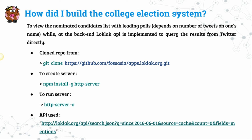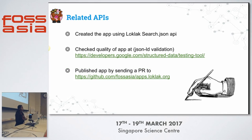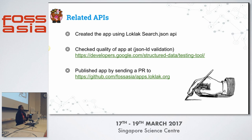To host my application, I cloned the repo from `apps.loklak.org` where all LokLok apps are deployed. I installed the server using `npm install -g http-server` — first checking that Node.js was installed — then ran `http-server -o` to display all applications. The related APIs I used include the search JSON API and aggregation values. I checked quality before hosting and published the app by sending a pull request to the `apps.loklak.org` GitHub repo.